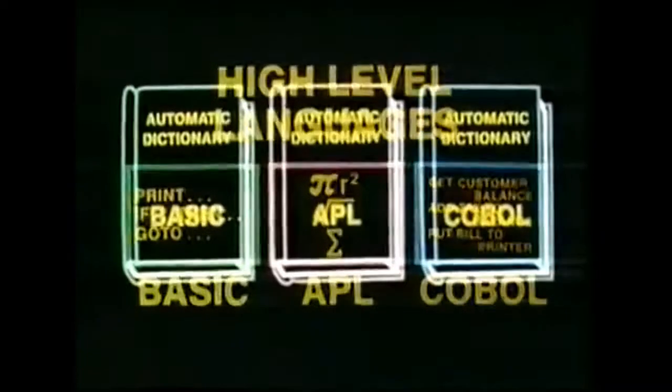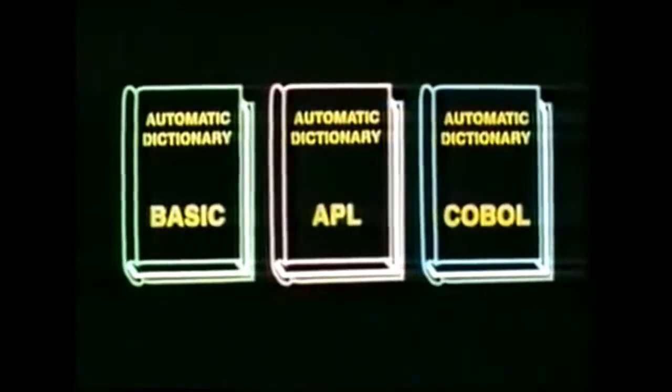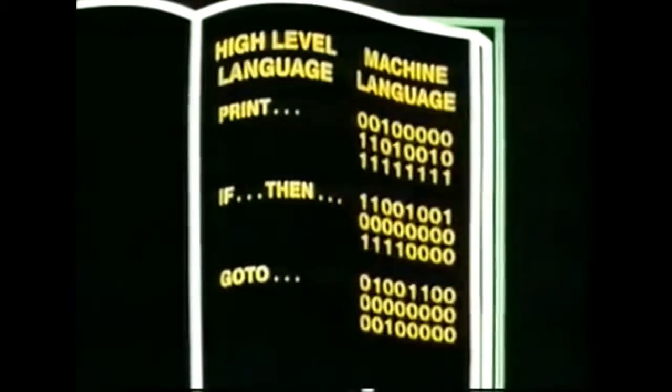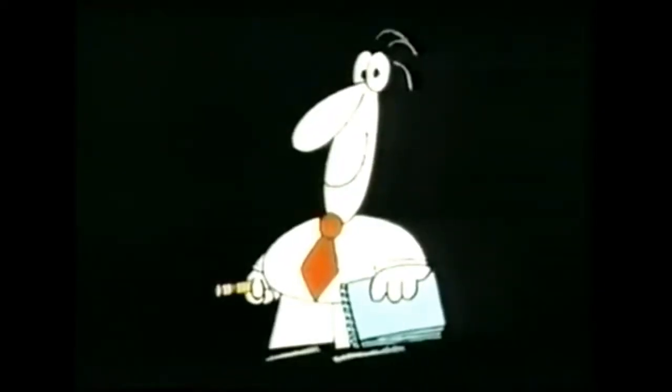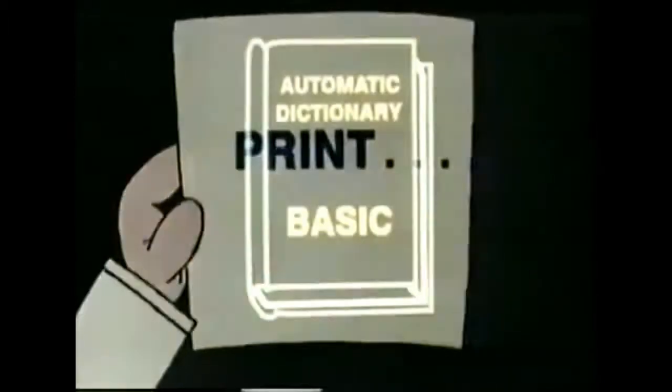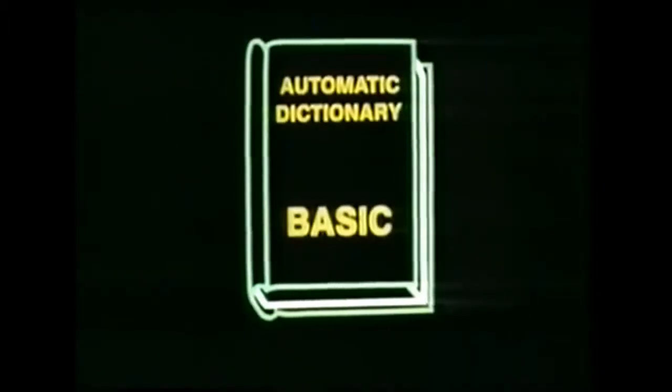And then they prepared automatic dictionaries, which, just like English-French dictionaries, contained a list of all the vocabulary of the particular high-level language in one column with its machine language equivalent in a second column. Then, whenever someone wanted to use a key word or symbol or procedure in the high-level language, this dictionary would look it up, find out what it meant in machine language, and pass this on to the computer.